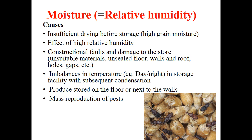Regarding moisture or relative humidity, the causes may be insufficient drying before storage, or high grain moisture content, which will lead to grain losses by attracting pests and diseases. Construction faults and damage to the store — unsuitable material, unsealed floors, walls, holes, gaps — and imbalance in temperature between day and night in storage facilities with subsequent condensation, where water vapor converts to water. Also, grain stored on the floor or rested against the wall, and mass production of pests.